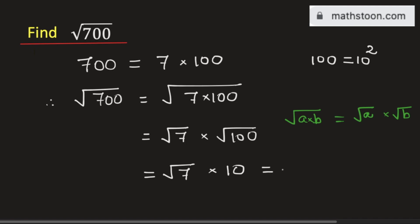Now multiplying, we will get 10√7. And this is the value of √700.